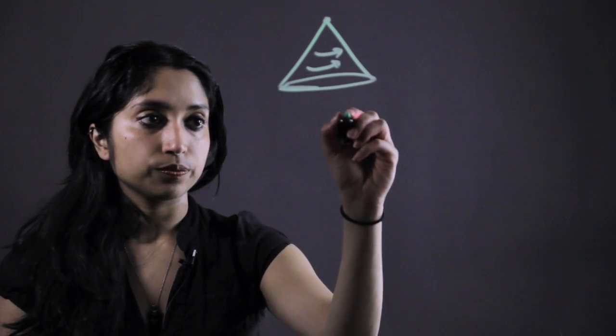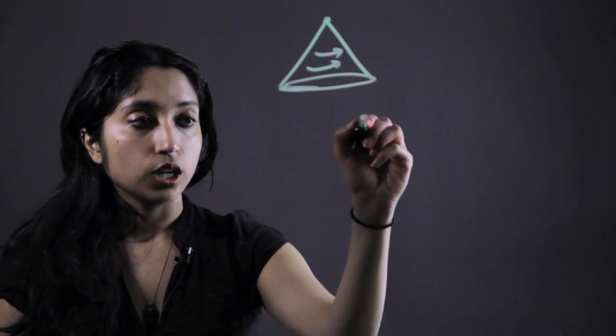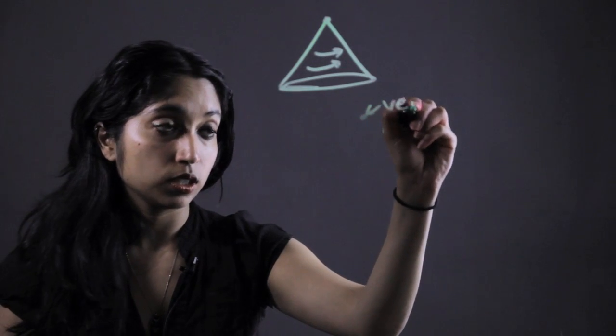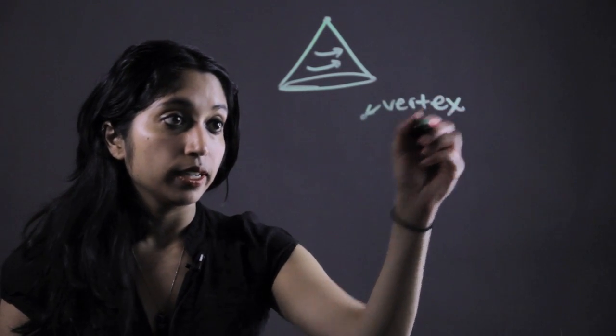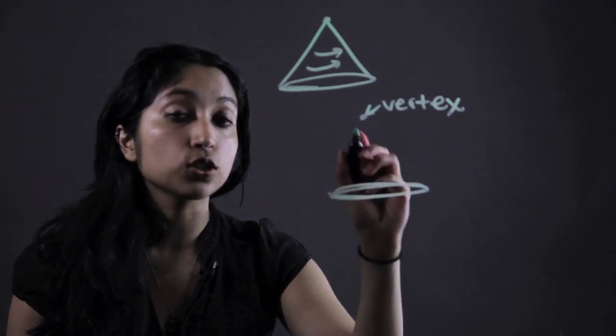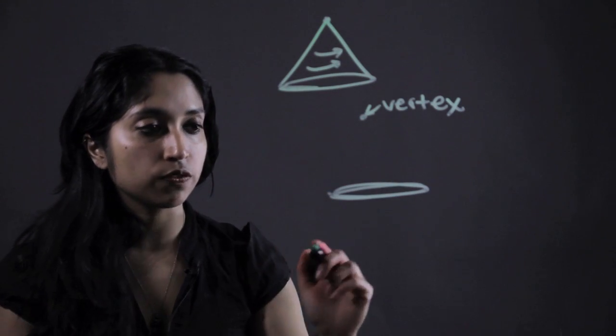So if we use another definition, a cone is basically defined by this point up here which is the vertex and a circular base. These are the two things that are going to limit and define our cone.